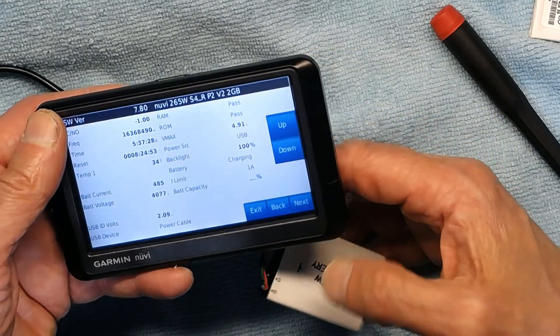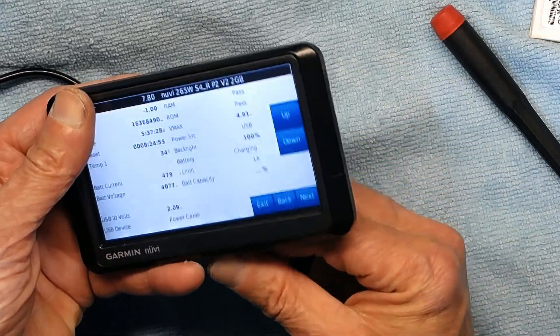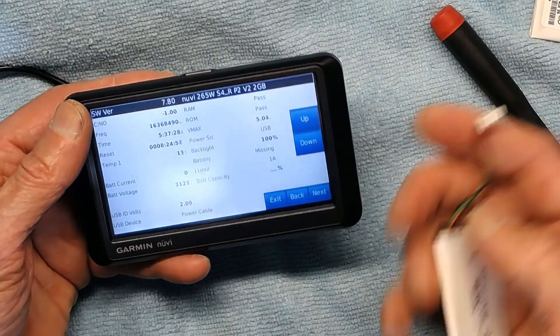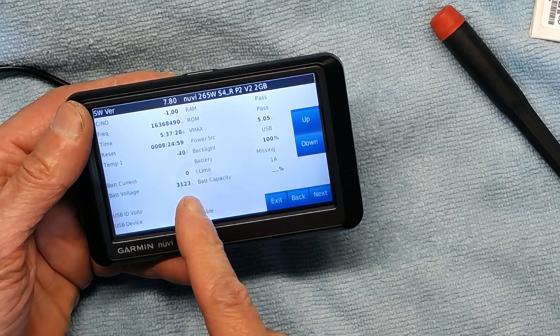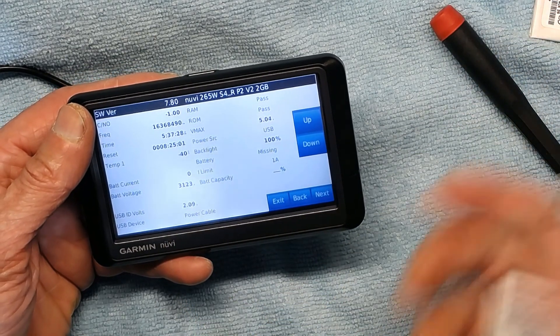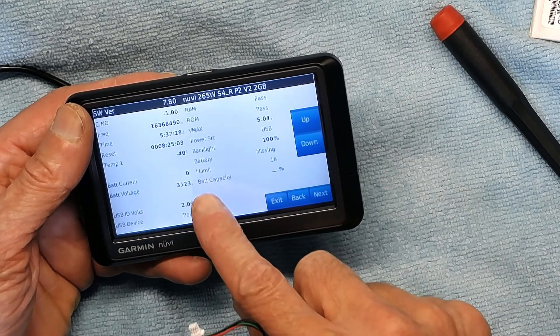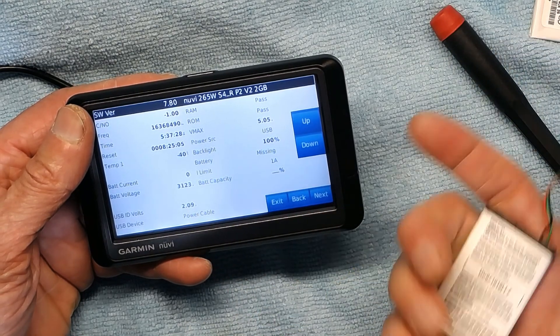Now watch as I change the battery with a different battery. First, when I unplug the battery I have no battery now, and watch the current drops to zero because there is nothing to charge. It's complete, and the battery capacity drops to nothing because there is no battery.